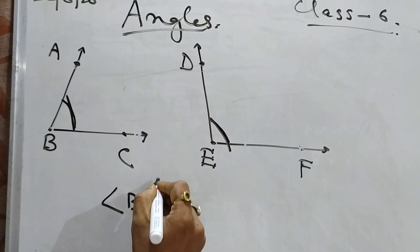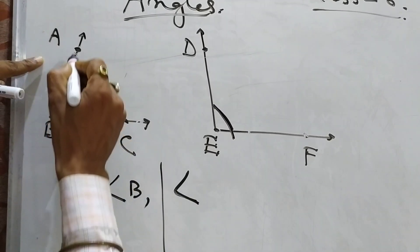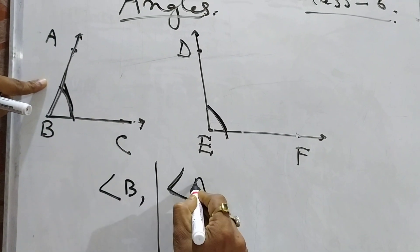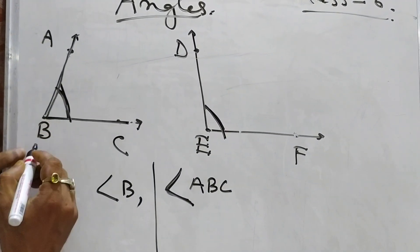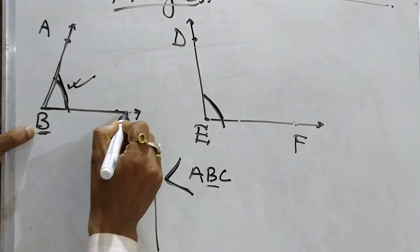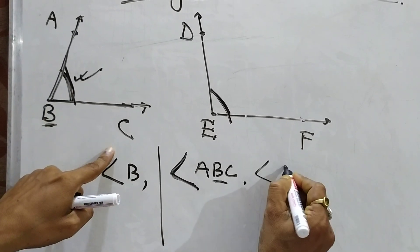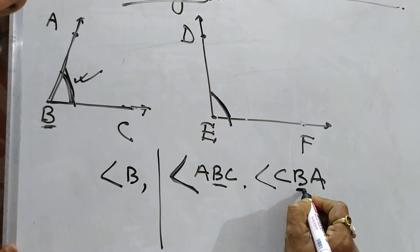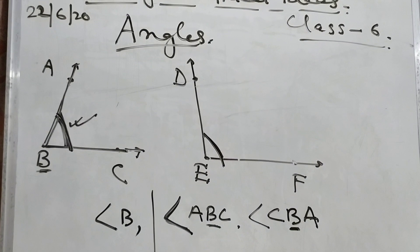There is another way to name the angle. This is the symbol of angle — I give this symbol because this represents the angle. So we can write angle ABC. The letter which is in the middle, B, represents the angle. Remember: the letter in the middle represents the angle. So I can also represent it as angle CBA — here also, the letter in the middle is B, so it represents angle B. In this way, we can represent the angle.